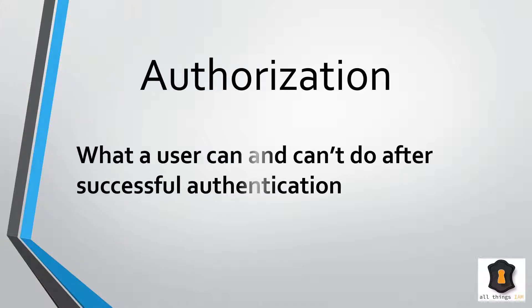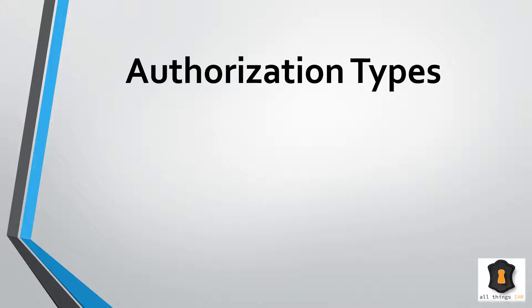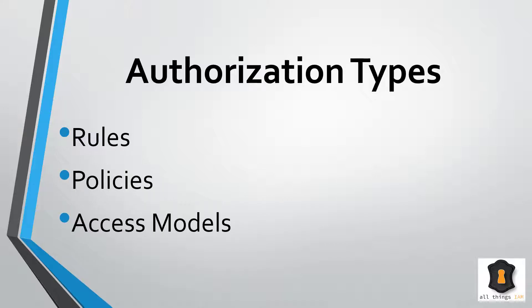So let's talk about authorization. What is authorization? Authorization is what a user can do after a successful authentication. If you look it up, you might find definitions such as: it's the process of giving someone access to a resource. That's really what it is — I'm going to give somebody permissions or authority to do something they should be able to do. There are a few types: rules, policies, and access models.